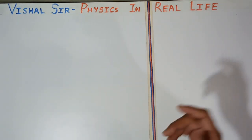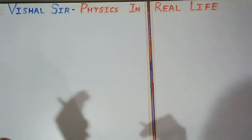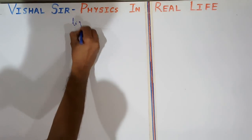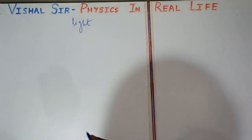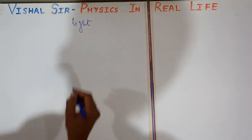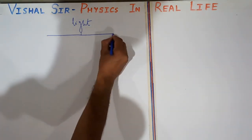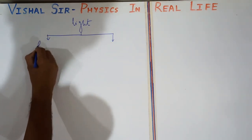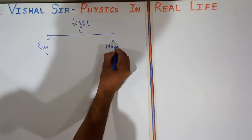Now let us start — what is light? First let us understand the background. Light is studied in class 11 and 12. In 10th class you will also have to learn light. But in higher classes, light is divided into two parts: one is called ray optics and the other is called wave optics.